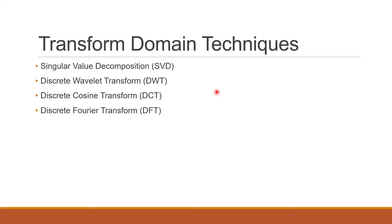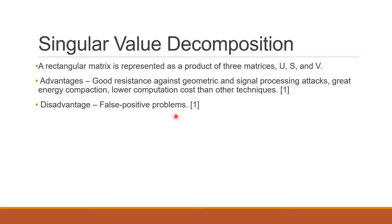These four transform domain techniques are the common ones used by researchers: SVD, DWT, DCT, and DFT. SVD decomposes a rectangular matrix into three matrices — an orthogonal matrix U, diagonal matrix S, and orthogonal matrix V. The advantages of SVD are good resistance against geometric and signal processing attacks, great energy compaction, as well as lower computation cost compared to other techniques. However, it has the disadvantage of false positive problems during extraction.